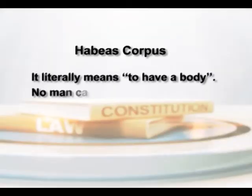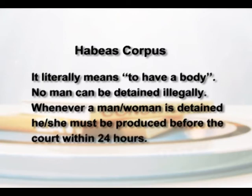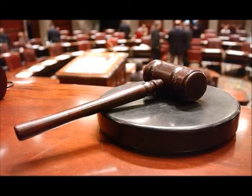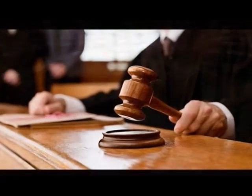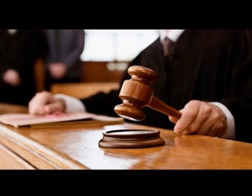Habeas corpus literally means 'to have a body.' No man can be detained illegally. Whenever a person is detained, he must be produced before the nearest court within 24 hours. This writ is a powerful safeguard against arbitrary arrest and detention. The underlying principle behind the writ of habeas corpus is that a person must get protection against any sort of arbitrary or unlawful detention. It originated from the British legal system and has been adopted in many countries.